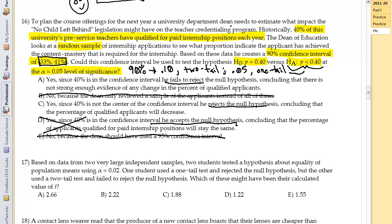We're going to fail to reject the null hypothesis. So that is no bueno. Yes, since 40% is in the confidence interval, he fails to reject the null hypothesis concluding there is not strong evidence of any change in the percentage. And this is the correct answer right there and that makes us happy.